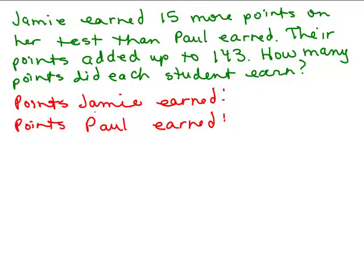We're going to write down something for how many points Jamie earned and how many points Paul earned, and either of them could be the variable to start off with. Let's say we're going to use p for the variable. Notice that Jamie earned more than Paul, so if we knew how many Paul earned, then we could add 15.